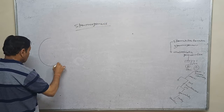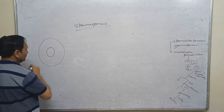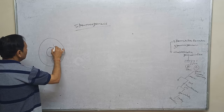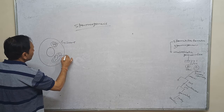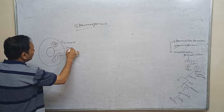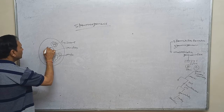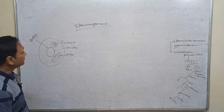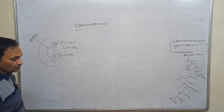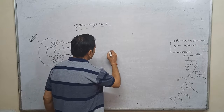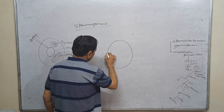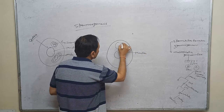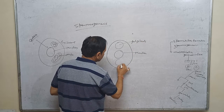The haploid spermatids have a well-developed nucleus, mitochondria, lysosome, and centriole. All these organelles will shift in a particular way to convert the spermatid into a spermatozoon. The nucleus is here, Golgi body is here, and mitochondria is here — these will rearrange during spermiogenesis.